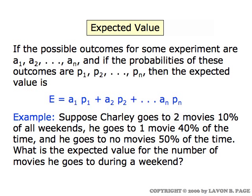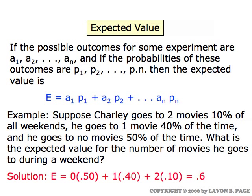For example, suppose Charlie goes to two movies ten percent of his weekends, forty percent of the weekends he goes to one movie, and half of all his weekends he goes to no movie at all. On average, how many movies does he go to per weekend? To calculate that, we take each of the possibilities — no movies, one movie, or two movies — and multiply each by its probability: no movies has probability 0.50, one movie has probability 0.40, and two movies has probability 0.10. When you do that arithmetic you get 0.6, which simply says that on average he goes to 0.6 movies per weekend.